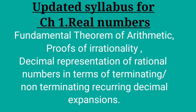Let's see the updated syllabus for Chapter 1 Real Numbers. The updated syllabus includes the Fundamental Theorem of Arithmetic — statements after reviewing work done earlier and after illustrating and motivating through examples — proofs of irrationality of √2, √3, √5, etc., and decimal representation of rational numbers in terms of terminating and non-terminating recurring decimal expansions.